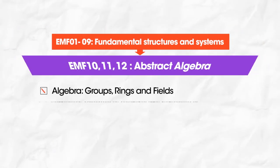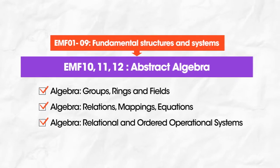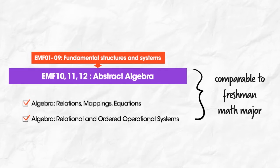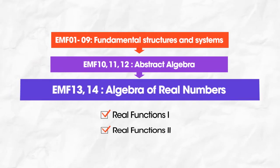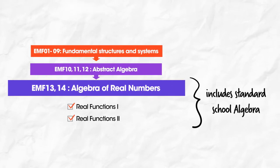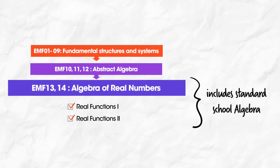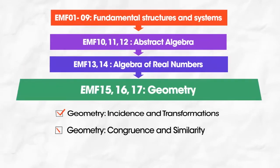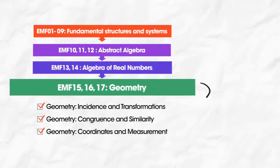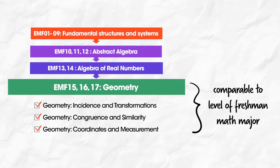There are three courses that cover abstract algebra at about the level of a freshman math major. They're followed by two courses on the algebra of real numbers, which cover topics familiar to teachers of standard school algebra courses. Then there are three courses that cover geometry from an abstract algebraic point of view, again at about the level of a freshman math major.